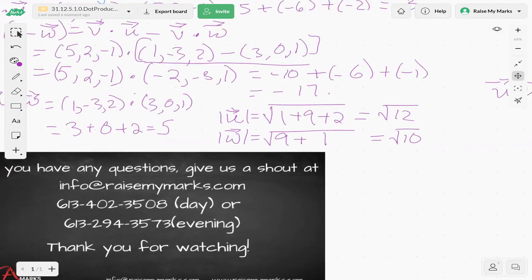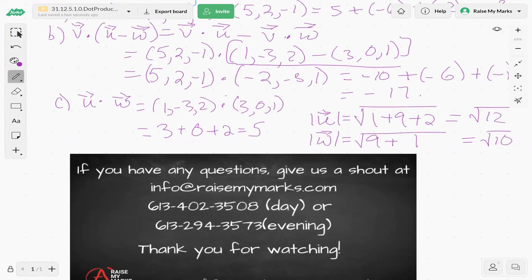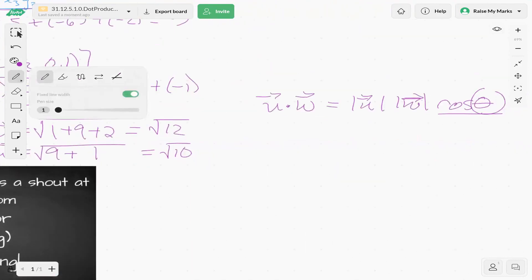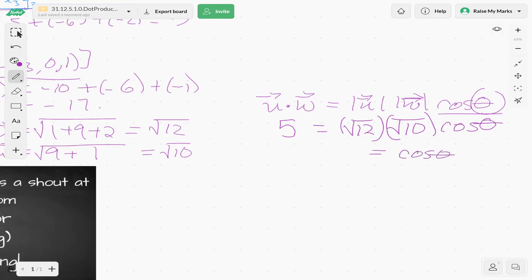So we know that the dot product of u and w is 5. We know that the magnitude of u is the square root of 12. So we're going to plug all those in and we're just left with the cosine of theta. So now we're going to solve for cosine of theta. Cosine theta equals 5 over square root of 12 times square root of 10.